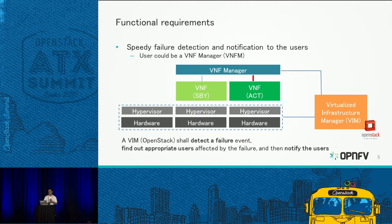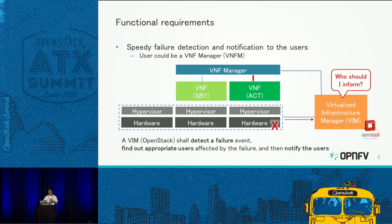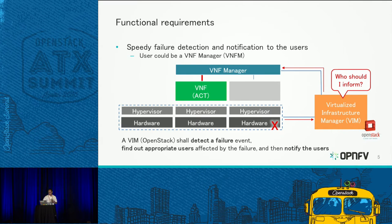By virtualization, you insert a virtualization layer — the hypervisors. Hardware failures are not directly visible to the VNF managers, so if there is a fault, it takes time for the VNF manager to know about it and perform the active-standby switchover, resulting in significant service downtime. What this project needs to realize — shown in red — are these three features: failure detection by OpenStack, identifying affected VMs and their managers, and sending notifications to trigger the switchover.